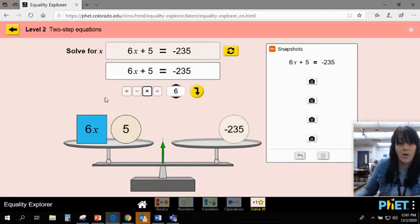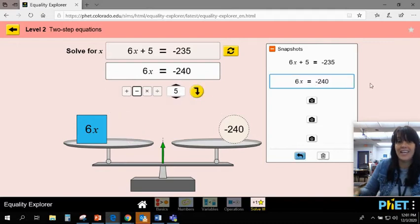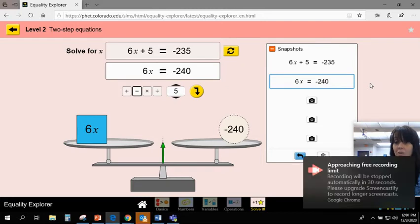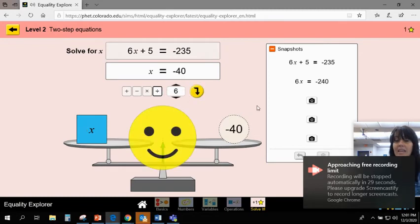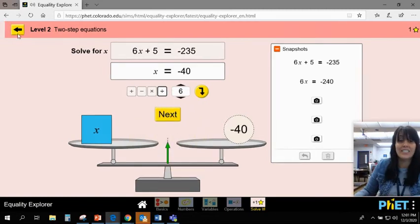Let me undo it and go back to the drawing board. What could I do? Well again, here I see a mix of constants and variables, so here's where I might want to discuss starting by subtracting 5 from both sides. When I do that, now I've made this much more simplistic. Then I can divide by 6 and get the correct answer.